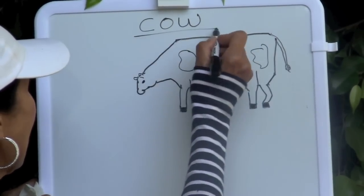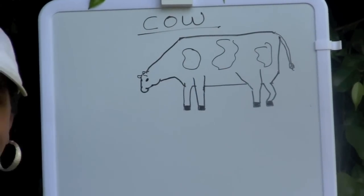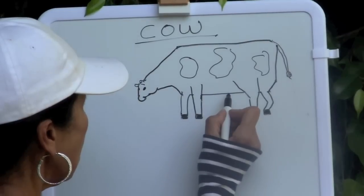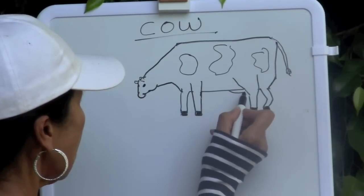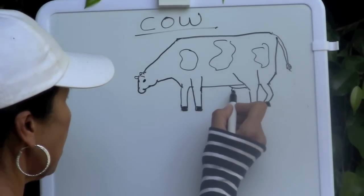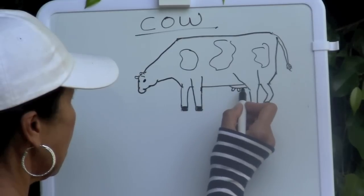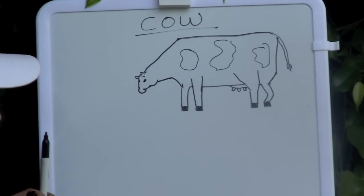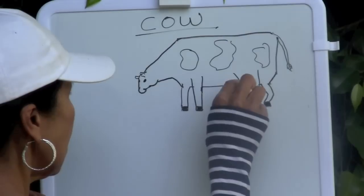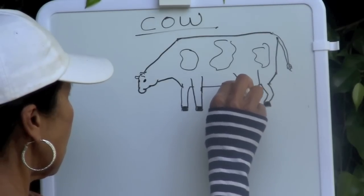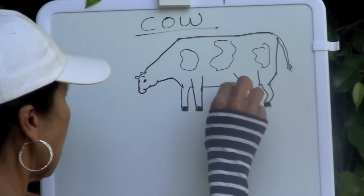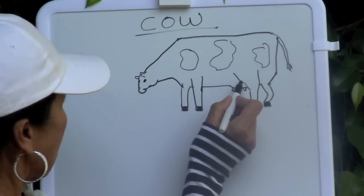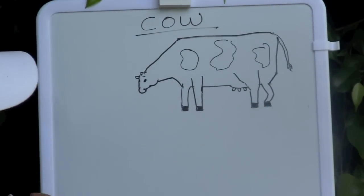Now C-O-W cow. To finish our cow we're going to draw a curved line under the bottom of the cow, which is going to represent the udder. The udder produces milk for a baby calf. And with your eraser I want you to erase that line there. There we go, the udder. Great job drawing a cow.